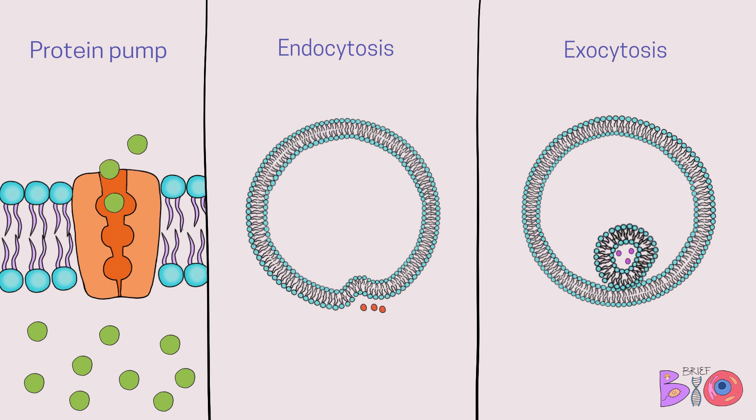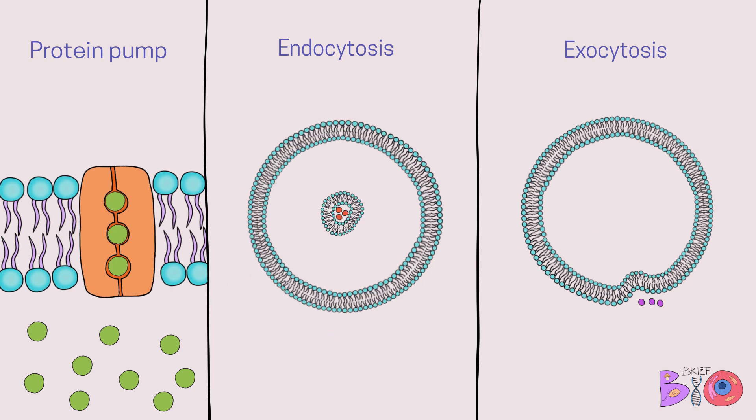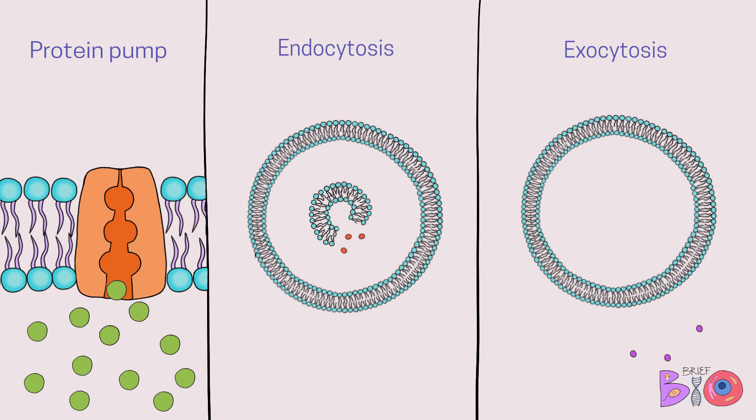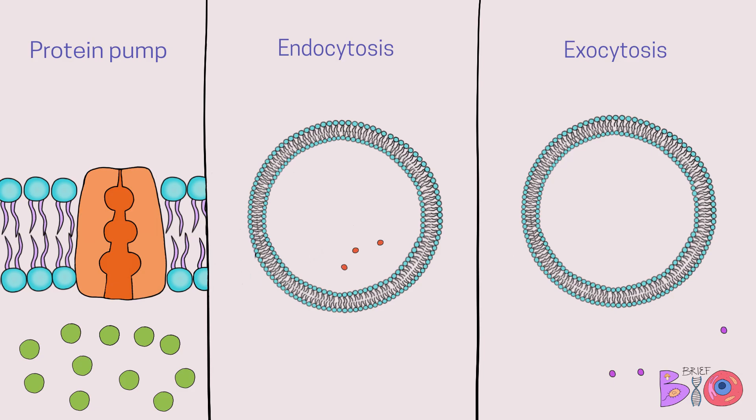Here are all three types side by side — protein pump, endocytosis, and exocytosis — which are all types of active transport.